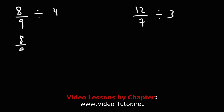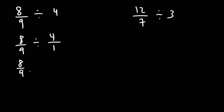So let's convert 4 into a fraction by putting it over 1. Now let's keep the first fraction the same, change division to multiplication, and flip the second fraction.